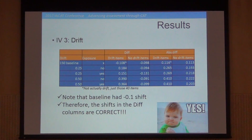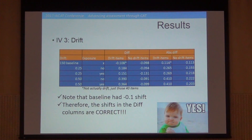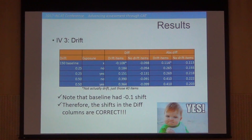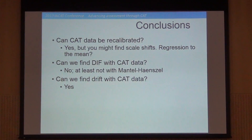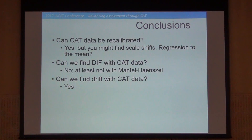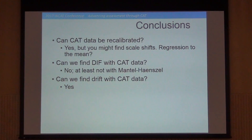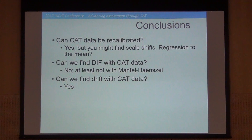So it says that if you have really sparse CAT data, this bodes well — you can probably find the drift. The conclusions here: can CAT data be recalibrated? For sure. You might find small shifts in the scale, so be careful about that. Can we find DIF? We couldn't find all the DIF, at least not reliably — it might be worth looking at. Can we find drift? Absolutely. So it's definitely worth looking for drift even in sparse CAT data.